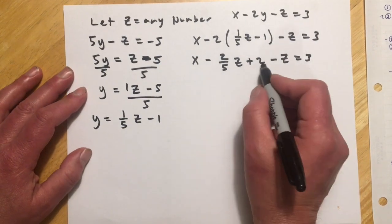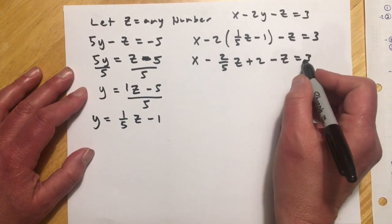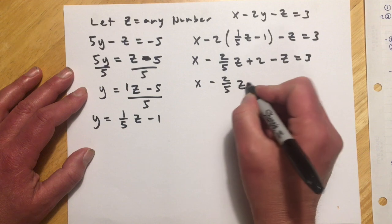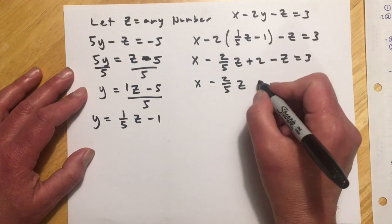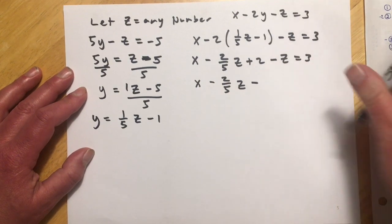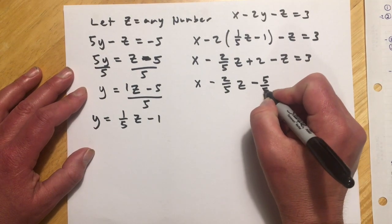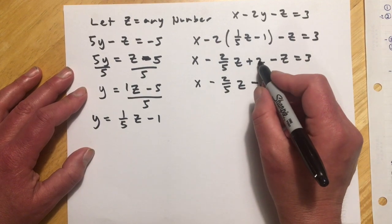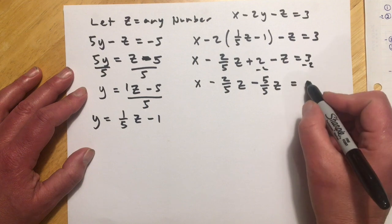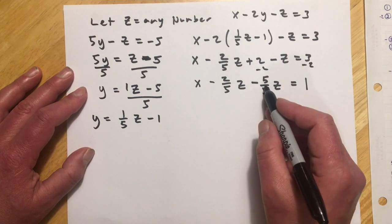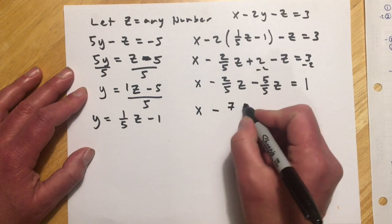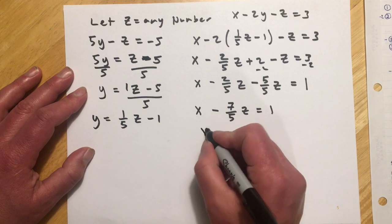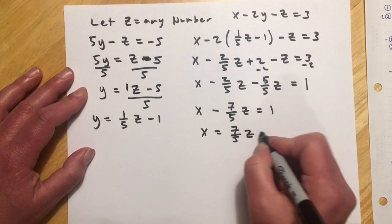And so now I need to get these fractions combined. I think I'll get this 2 over there just as I'm writing this out. And so this is going to be minus two-fifths z. Adding the 2 over is going to make this side a 1. Right now I have minus z, so I'm going to write that as minus five over five z. So I'm just writing it with a common denominator. And then minus 2 minus 2 is going to make this a 1. So right there I would have x minus seven-fifths z equals 1. And then finally I'll add that over. So x equals seven-fifths z plus 1.